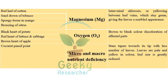Magnesium deficiency causes red leaf of cotton, sandrown of tobacco, spongy tissue of mango, and bronzing of citrus. These are all very important diseases caused by magnesium deficiency.